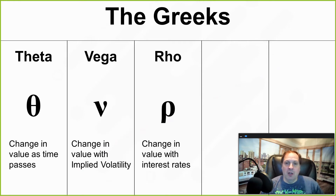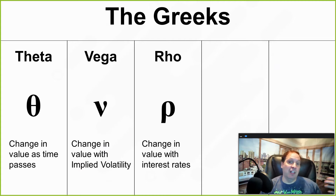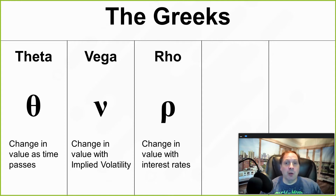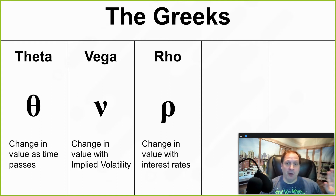Then there's rho, which is the change in value with respect to interest rates. Right now in 2020, interest rates are very low and nobody even talks about rho. But if interest rates go to 10%, 12%, 15%, rho is going to be a big topic of conversation. For now, we're just going to ignore it.